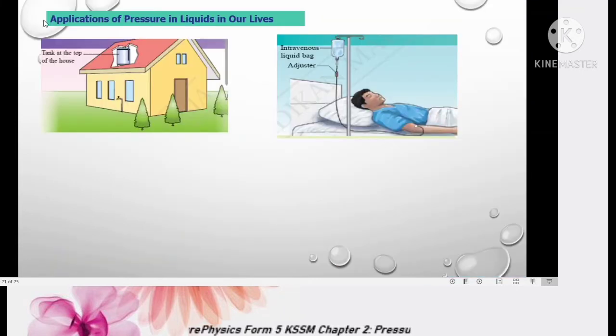If you want to discuss about application of pressure and liquids, especially in our everyday lives, it's very important for you all to recall what you have studied before about factors that affect pressure and liquids. We have derived the formula P equals H rho G. H is depth of liquid, rho is density of liquid, G is gravitational acceleration. So this is about application of pressure.